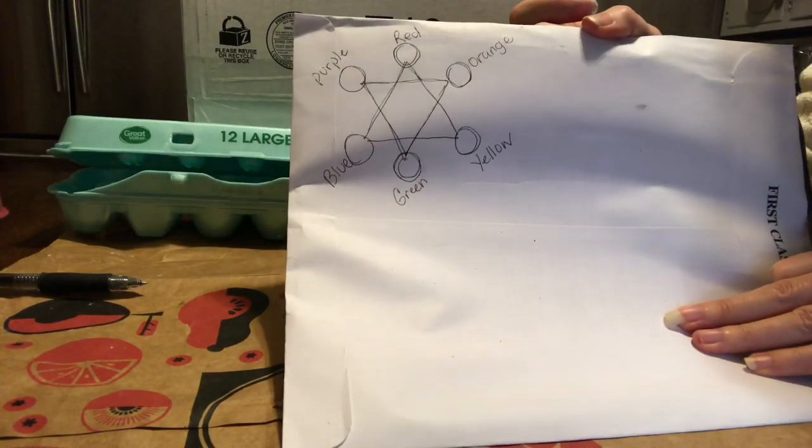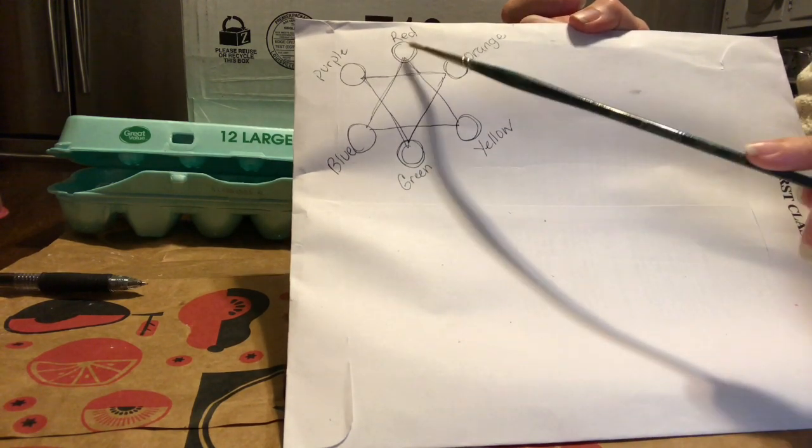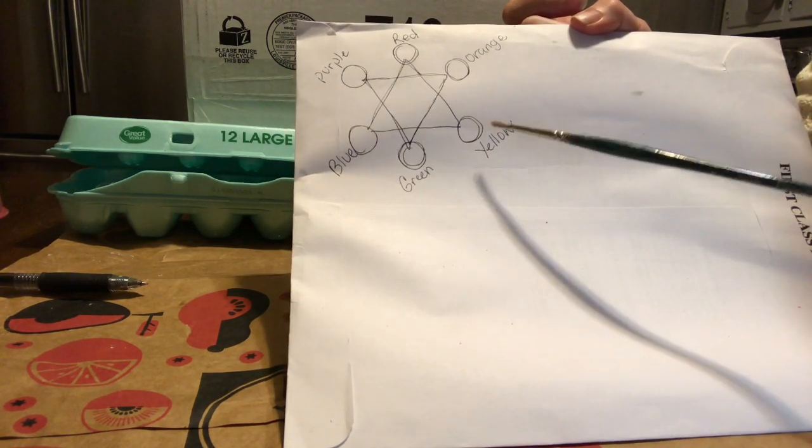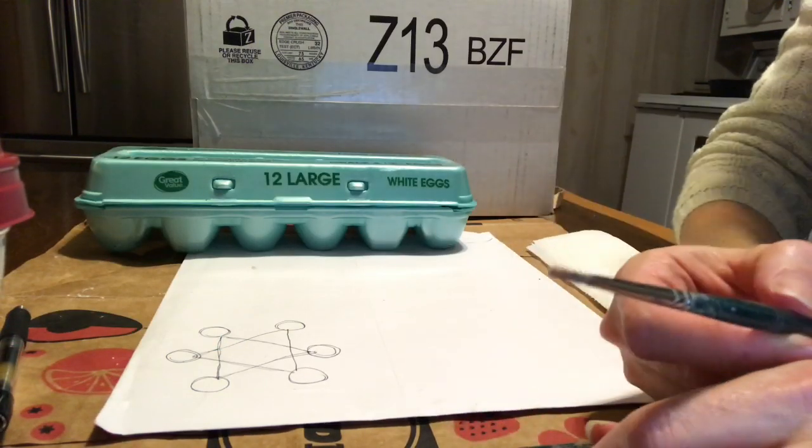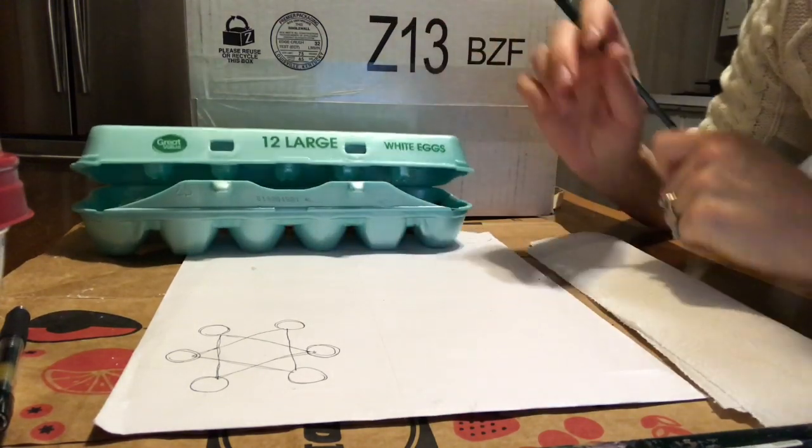Your color wheel needs to be labeled in this order. The first thing we're going to do is color in the red, the blue, and the yellow. Use a small brush, since we're working in a small space, to paint in the primary colors.